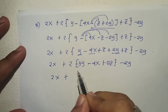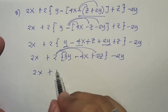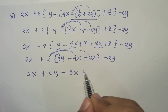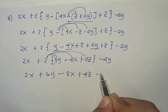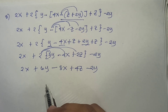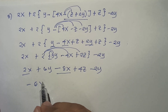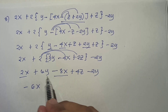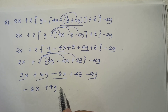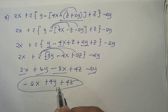We now distribute: 6y minus 8x plus 4z minus 2y. Simplifying, 2x and negative 8x gives negative 6x; combining y terms gives positive 4y; and plus 4z. So this is the result: negative 6x plus 4y plus 4z.